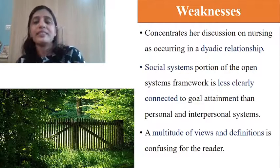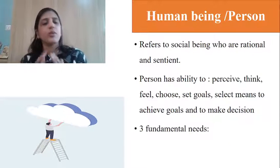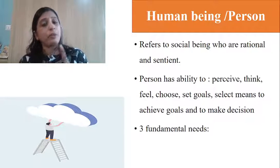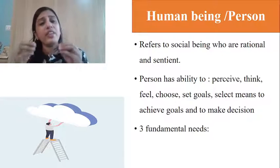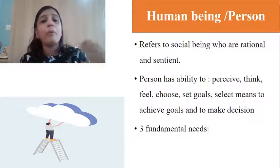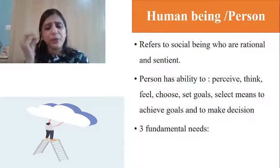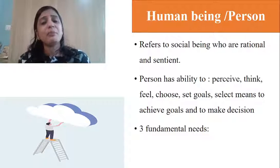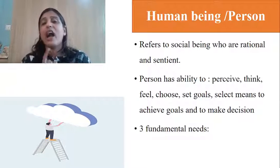Now moving on to the meta-paradigm. For every theory, we discuss four concepts: person/human being, health, environment, and nursing. According to King, a human being is an open system — a social being with the ability to think rationally and sentient. This person has the ability to perceive, think, feel, choose, set goals, select means to achieve goals, and make decisions.